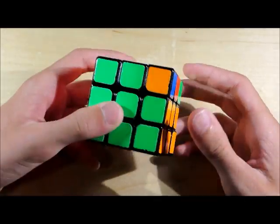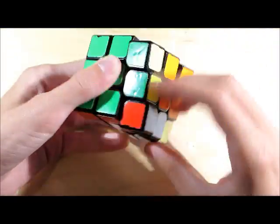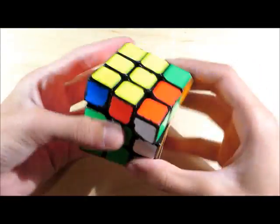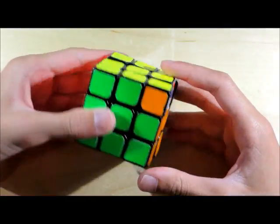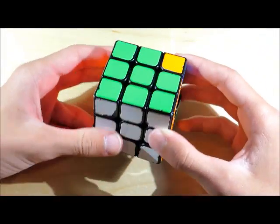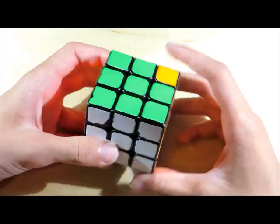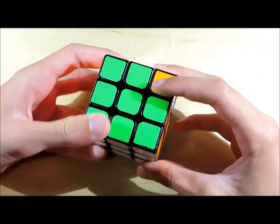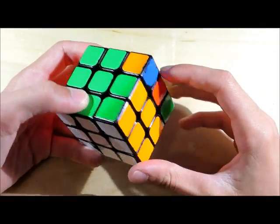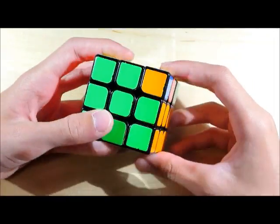I don't know if this T-perm would be faster than the standard T-perm that you guys probably all know. But I thought I'd show you guys this anyway because the algorithm itself is a lot shorter. And this could be used for fewest moves, for example, if you come across a T-perm because it's only 10 instead of 14.